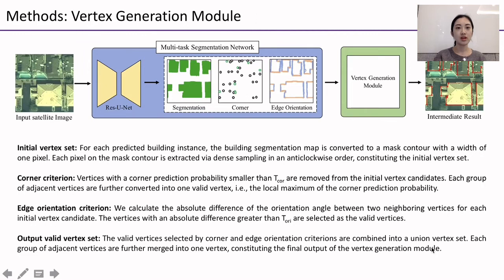Next, we introduce the vertex generation module. For each predicted building instance, the building segmentation map is converted to a mass contour with a width of one pixel. Each pixel on the contour is extracted via dense sampling in an anti-clockwise order, constituting the initial vertex set. We design a corner criterion and an edge orientation criterion to select valid vertices from the initial vertex set. For the corner criterion, vertices with a corner prediction probability smaller than a user-defined threshold are removed, and each group of adjacent vertices is further merged into one valid vertex.